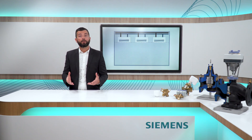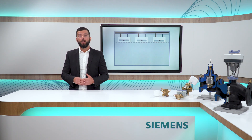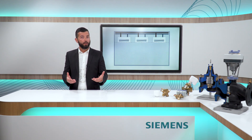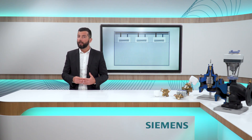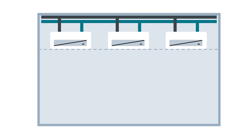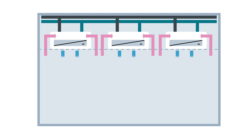The first type is called passive chill beam, where water flows through a coil connected or welded to different kinds of metal plates or fins that cools down or heats up the nearby air and generates a constant air circulation by natural convection.